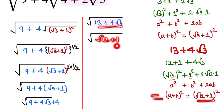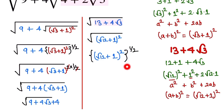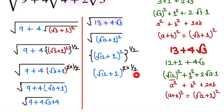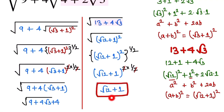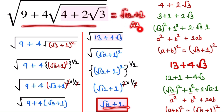So we have (√12 + 1)² under a square root, which is the power 1/2. The exponents 2 and 1/2 cancel, leaving us with √12 + 1. Therefore, the simplified final answer is √12 + 1. Thank you for watching — if you liked the video, please subscribe to the channel and share it with your friends.